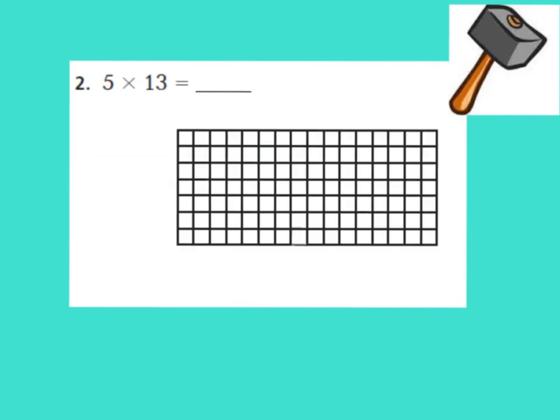Okay, let's look at number 2, and we're going to do this one together. We have 5 times 13. We're going to use the distributive property or our break-apart method.